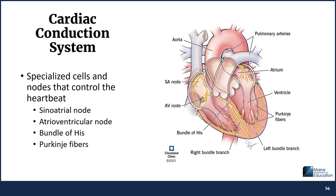Next, the excitation phase passes into the atrioventricular bundle, also called the bundle of His, which transmits electrical impulses from the AV node to the Purkinje fibers of the ventricles. The Purkinje fibers are a network of cells located in the sub-endocardial surface that rapidly transmit cardiac action potentials to the myocardium of the ventricles, allowing a coordinated ventricular contraction, also known as ventricular systole, moving blood from the right and left ventricles to the pulmonary artery and aorta respectively.